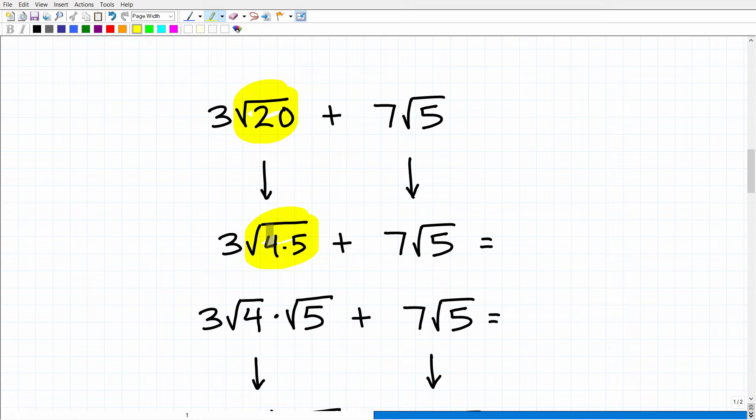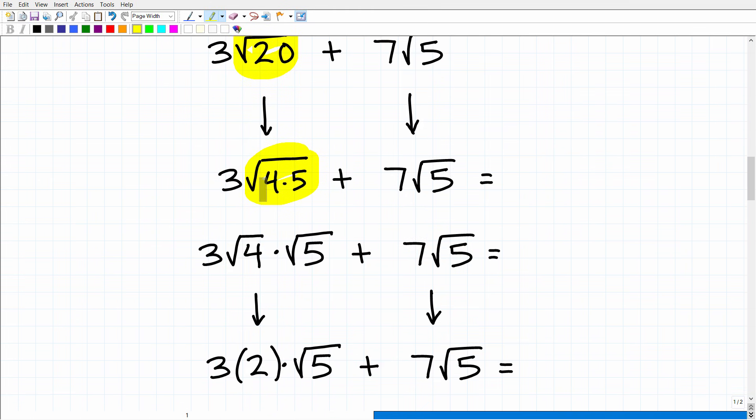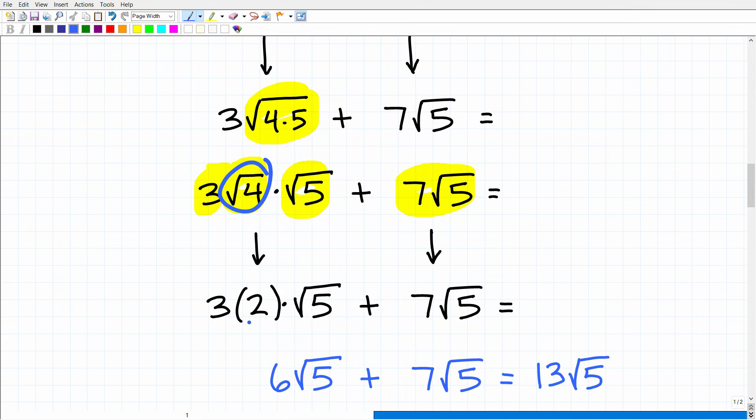So we can think of the square root of 20 as the square root of 4 times 5, and then of course we can break up the square root of 4 times 5, these factors as their own individual square roots. So what we have here is 3 times the square root of 4 times the square root of 5 plus 7 square root of 5. Now the advantage of doing that is that we can actually take the square root of 4. So the square root of 4 is 2. So we have 3 times 2 times the square root of 5, and now we have a square root of 5 here and a square root of 5 there.